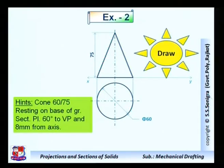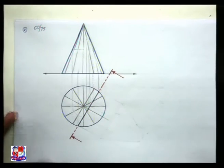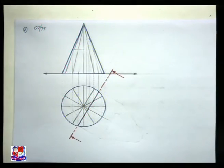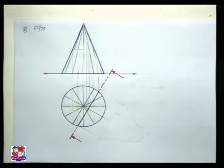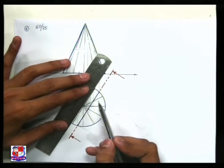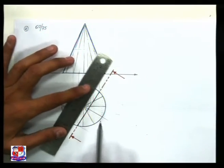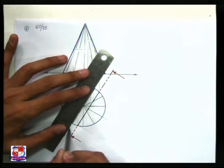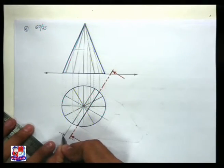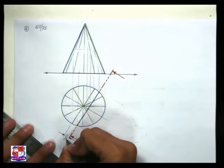Up till now we have drawn the front view and top view. Then it is given that it is cut by a cutting plane which makes an angle of 60 degrees with VP and at a distance of 8 mm from its axis. This one is the axis, and from this axis we have to draw a line at an angle of 60 degrees with the XY line. Parallel to this line, draw a section plane at a distance of 8 mm — this distance is 8 mm between the cutting plane and the axis of the solid in top view.